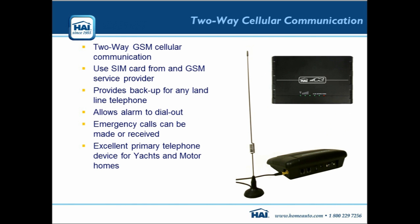Alternatively, and what most people use, is the GSM dialer — the C3. This gives the HAI system its own dedicated phone line so it's not sharing the house line. When it dials out, you know it's the alarm system calling because it has a unique phone number. With smartphones you can set a different ringtone. It's also far more secure because a potential intruder cutting the phone wires on the outside of the building won't cut off the system's ability to dial out and warn somebody.